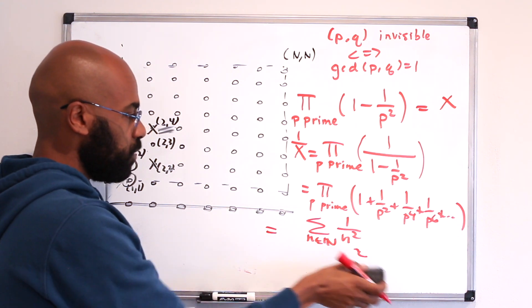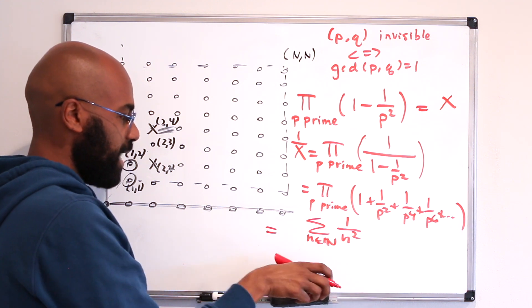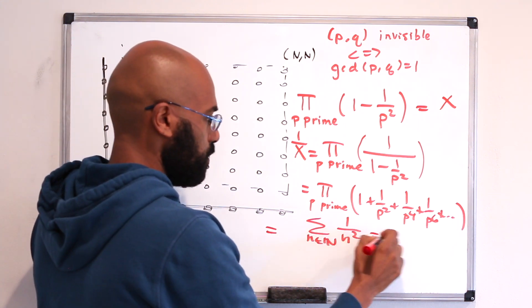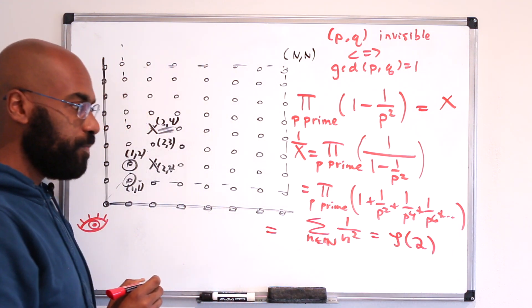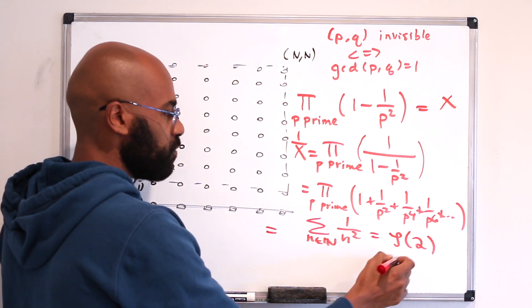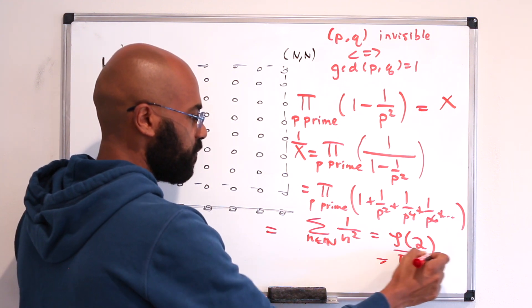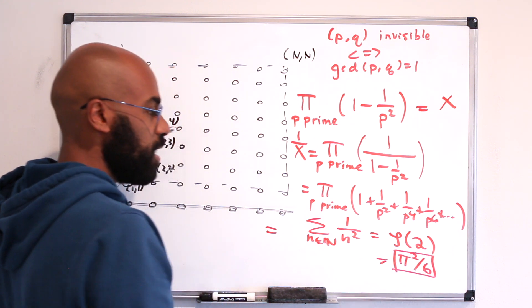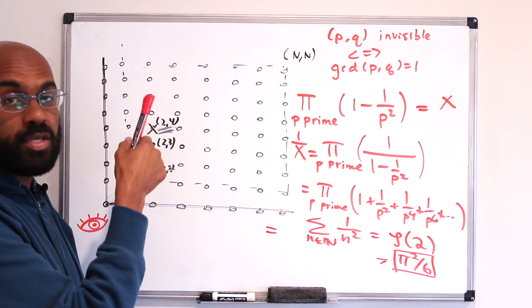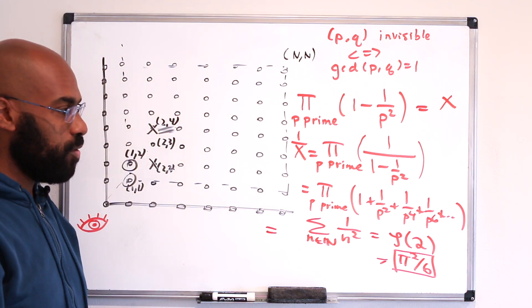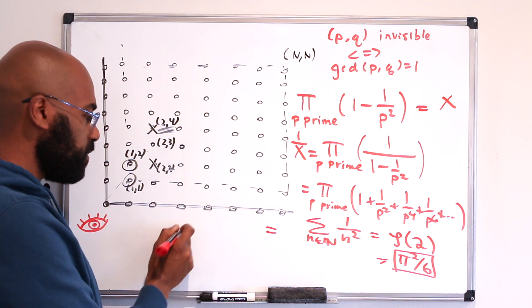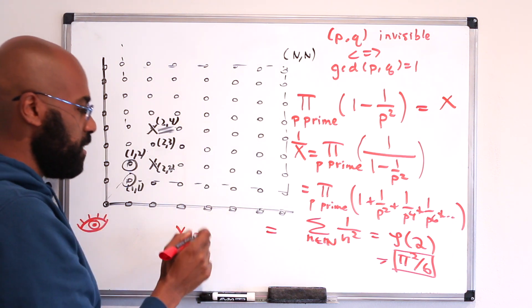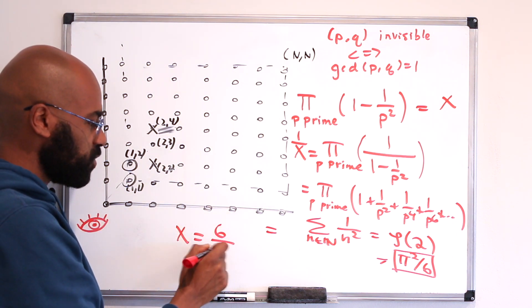This sum is classically known to be π²/6. Therefore 1/x = π²/6, and so x — the probability that a lattice point is visible from the origin — is 6/π². That's a pretty surprising and beautiful result: the density of visible lattice points in the first quadrant is 6/π².